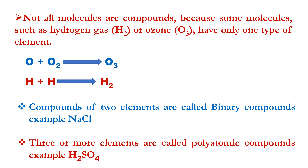Not all molecules are compounds. The reason is because some molecules, such as hydrogen gas or ozone, have only one type of element. Because some molecules have only one type of element, they are not qualified to be classified as compounds, since a compound must have at least two different elements.